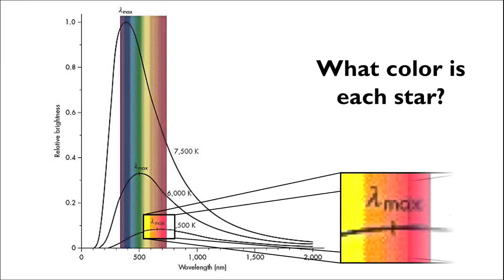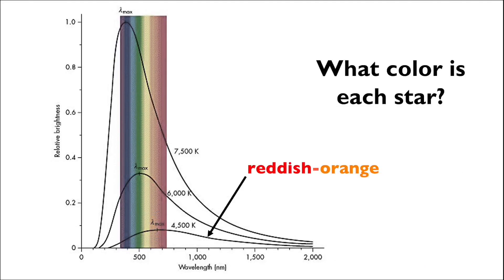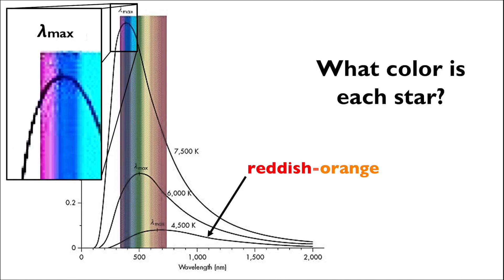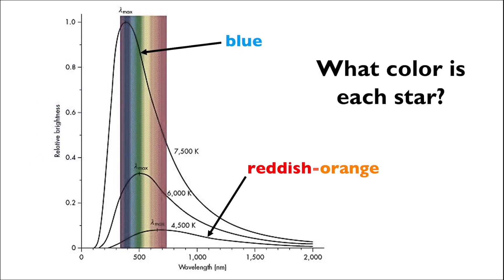In the case of the 4500 Kelvin star, its peak is in the reddish-orange portion of the visible spectrum, so it'll be a reddish-orange star. The 7500 Kelvin star with the tallest blackbody curve peaks in the blue range of the visible spectrum, so it'll be a blue star.